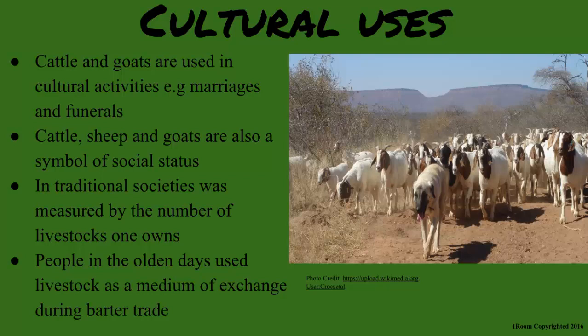In many African communities, livestock have a bearing on the social status of a man. How do you mean? Well, wealth in traditional societies was and is still measured by the number of cattle, sheep and goats you have. The more you have, the wealthier and the more respected you are in the community. I get it — you rank higher in the social ladder. Your English is refined. Thank my Mze for it. People in the olden days used livestock as a medium of exchange during barter trade. I learnt that in a history class.